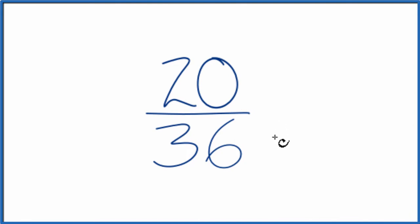To do that, we need to find a common factor, something that goes into 20 and 36. So these are the factors for 20 and 36.